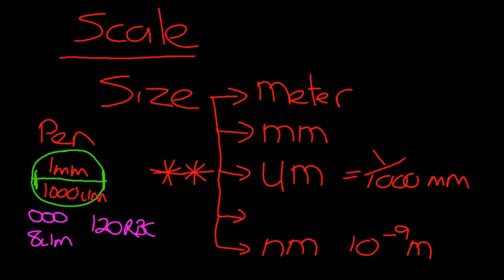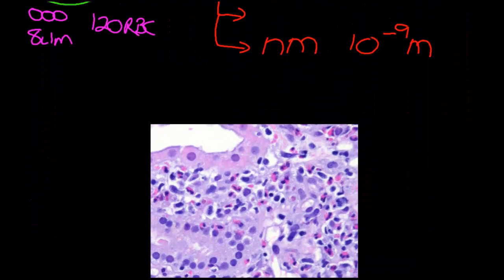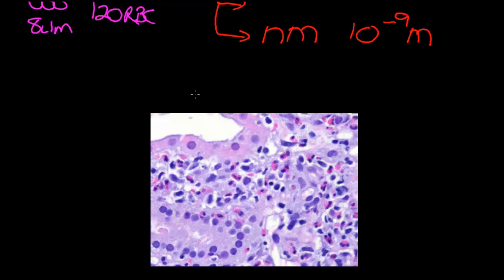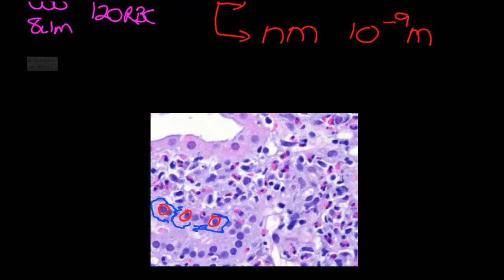Let's look at a typical histological picture and talk about what scales we can see. This picture has been taken with a light microscope. What we can see is a bundle of nuclei — these little dark spots — which are the nuclei of some cells in a tissue. Surrounding them is a sort of pink, amorphous-looking material. Some of these nuclei are much darker than others and have different shapes, but these are all nuclei.